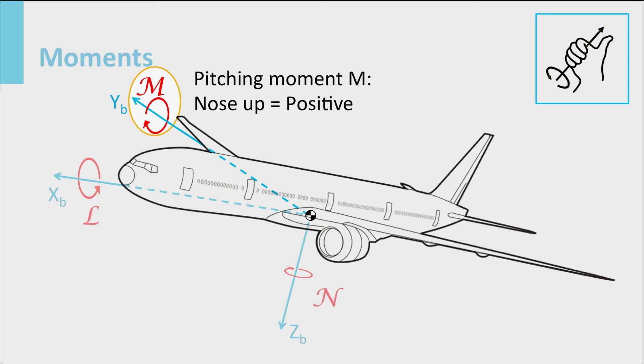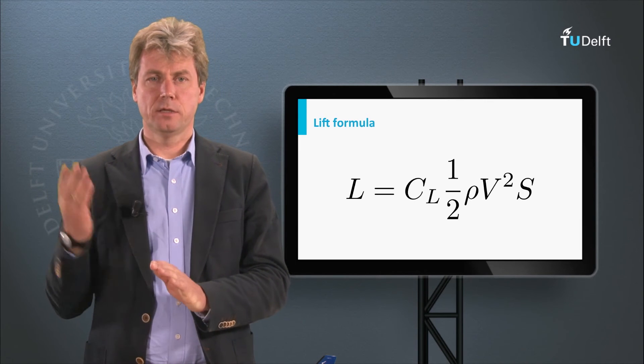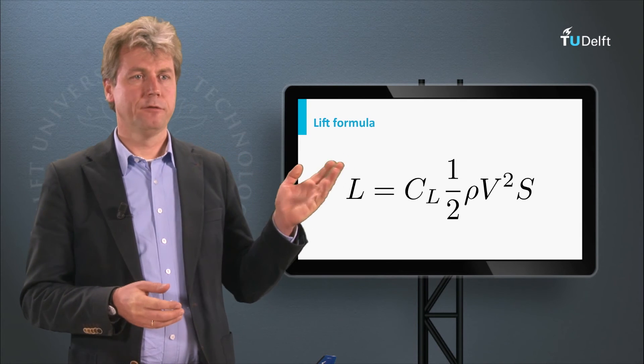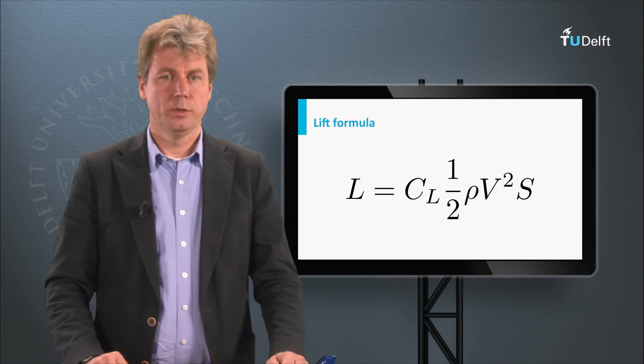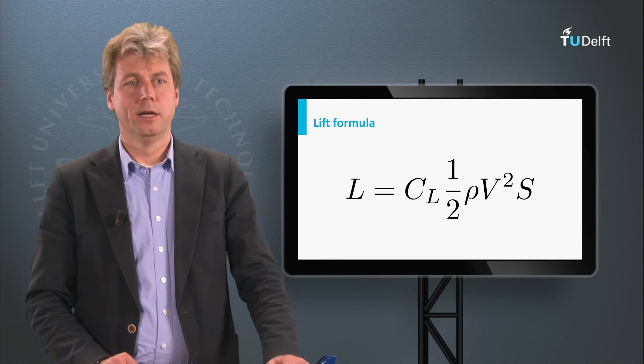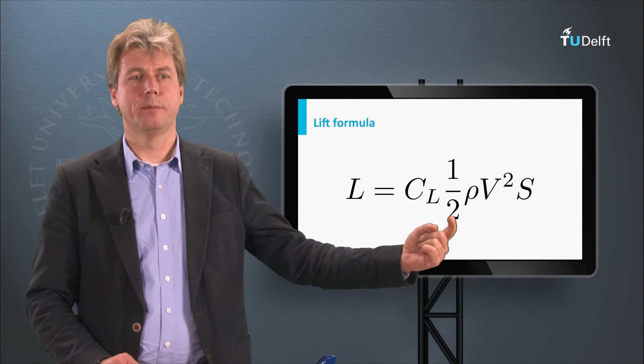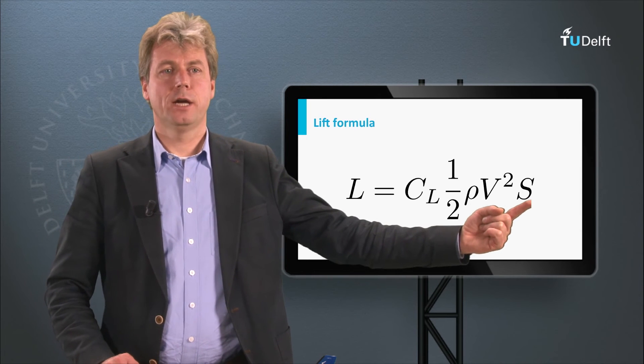So that is what we will mainly look at today, but you will see that a lot of times we do not actually discuss the actual forces, but we only work with the coefficients. And why this is, is best explained using the lift formula that I have here. We see here the lift force, you have seen this before in the aerodynamic forces. Lift is the lift coefficient CL, times half rho V squared, the dynamic pressure, times the surface area of the wing.